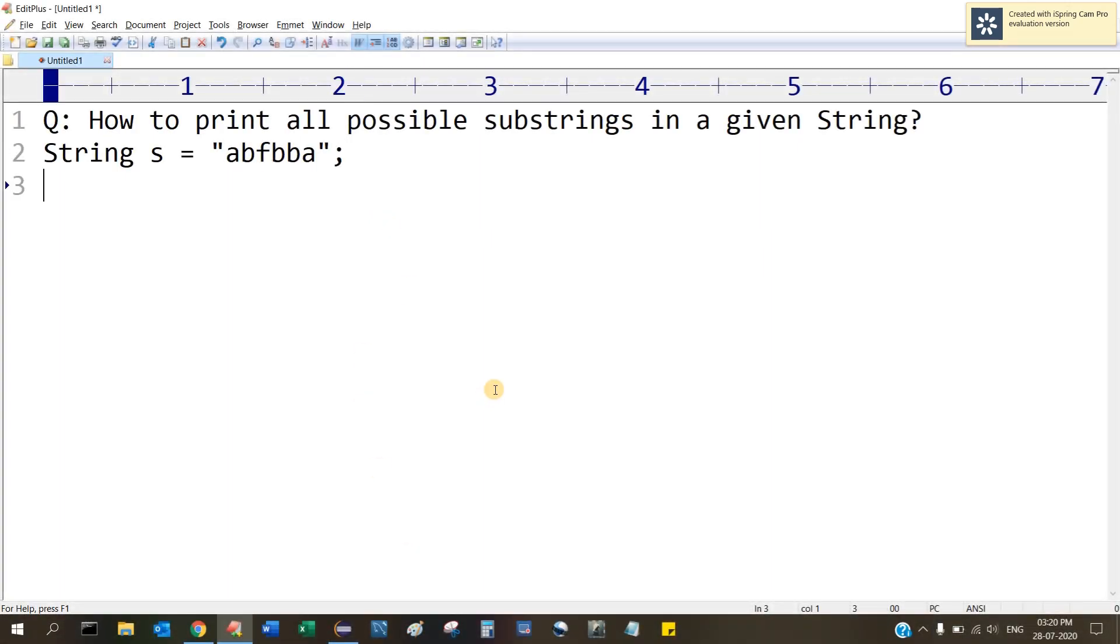Okay, so first of all we need to see how many substrings are there. If this is the string, we have substrings like 'a', then 'ab', then 'abf', then 'afb', then 'abfbba'.